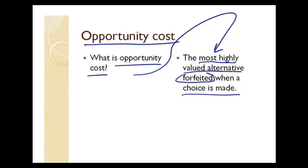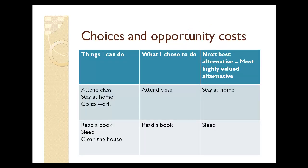Let's give an example of what we mean. Suppose I'm a student, and here are things that I can do within the next hour or two: I can attend class, or I can stay at home, or I can go to work. Let's suppose that what I choose to do is attend class — that's my choice. Out of the three things I could do, I choose to attend class.